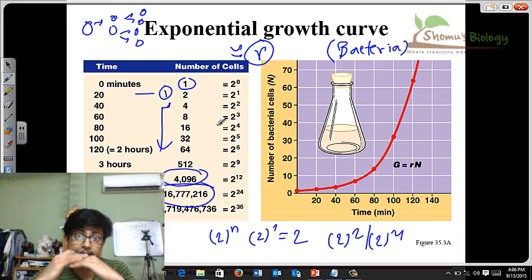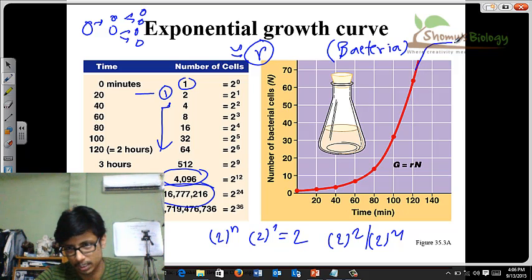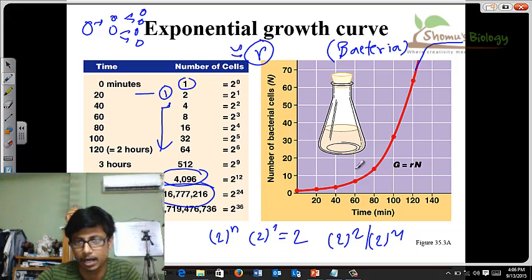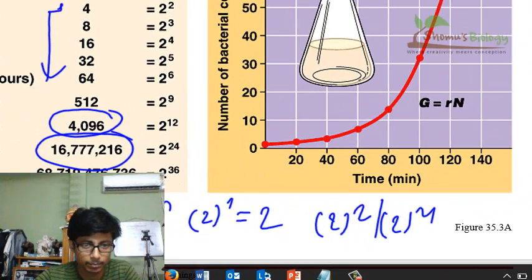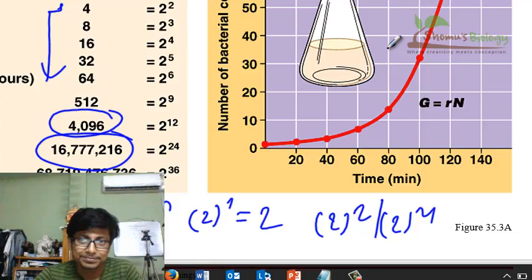Once the environmental factors get saturated, the organisms will slowly start to die and this graph slowly starts to balance off. And once that thing happens you see the curve now looks like S. Once that thing happens, then this S-shaped curve is known as logistic growth curve.